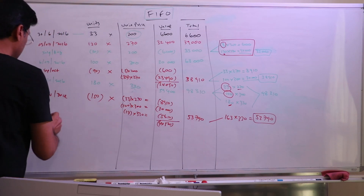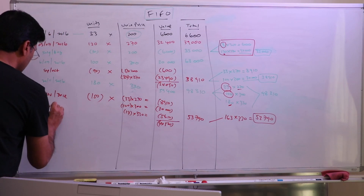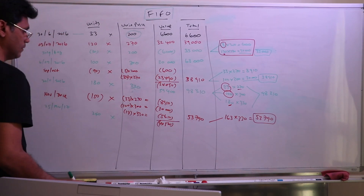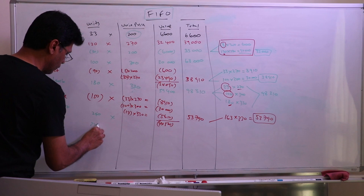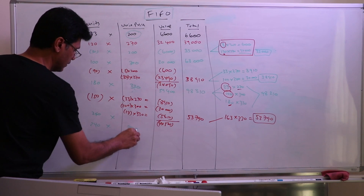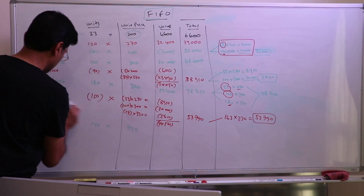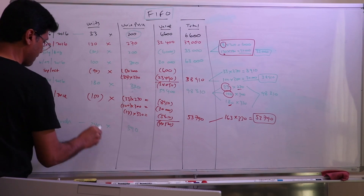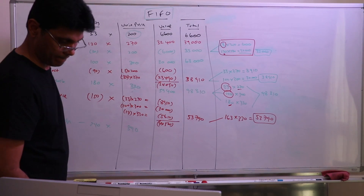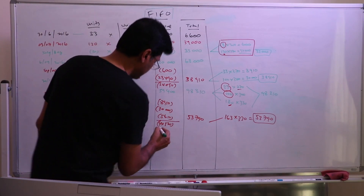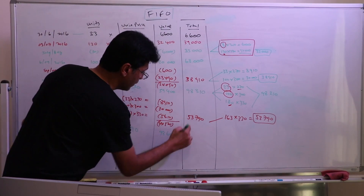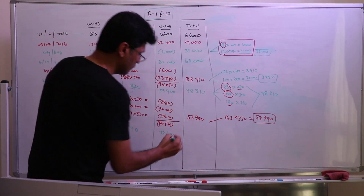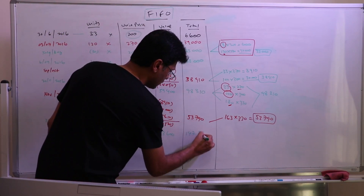Next purchase: 25th March 2017 — 240 units at $390 each. That's 240 times $390 equals $93,600. Adding to the previous balance of $53,790 gives a total of $147,390.